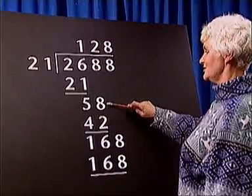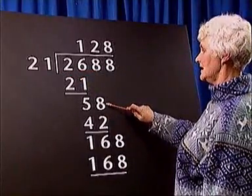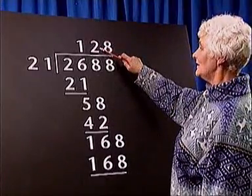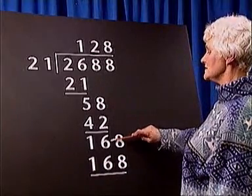We then bring down the next digit, 8. 21 goes into 58 twice, which is 42. So, we place a 2 above the 8 and subtract 42 from 58, which is 16.